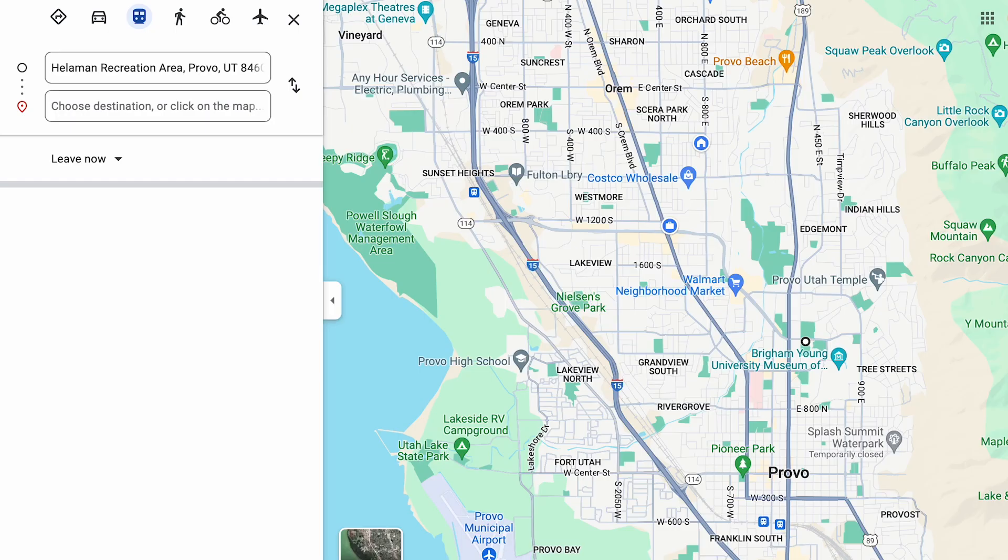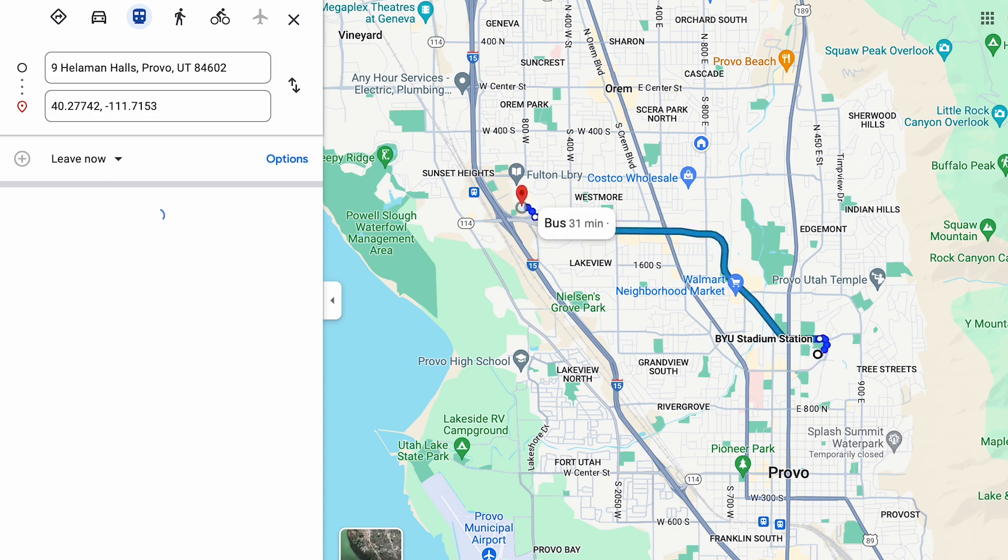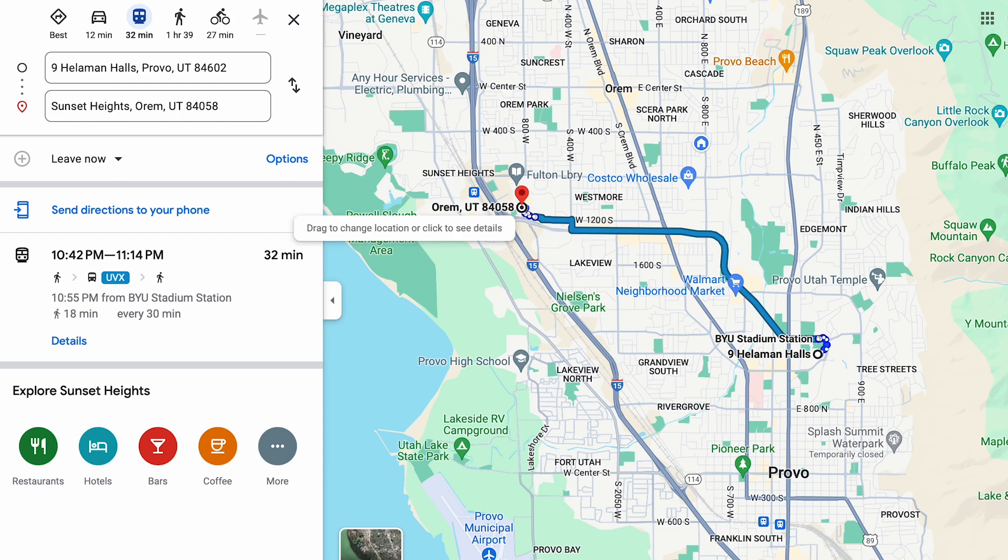We have ways of checking to see if our model is reasonable. We could check it against actual data, sending someone to take the trip and time themselves. But there's another way. We could compare our model to Google's model. They have a model to estimate how long it takes to travel across town walking and taking the bus. What do they get?